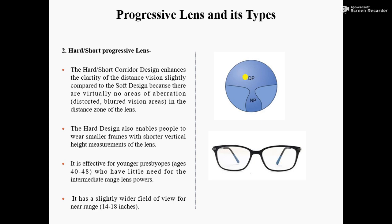The hard design also enables people to wear smaller frames with shorter vertical height measurements. The height from top to bottom of the frame is smaller, so patients who want to wear small frames will find the hard design progressive lens to be the better option.